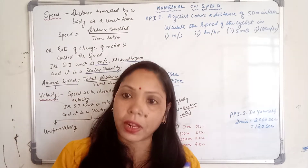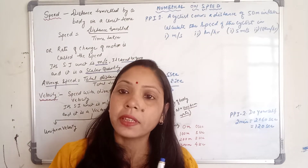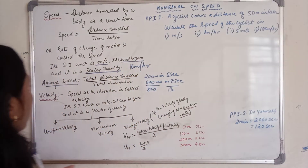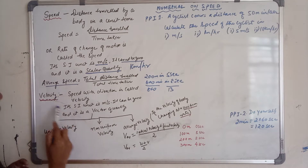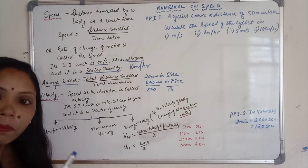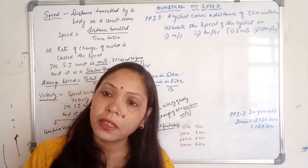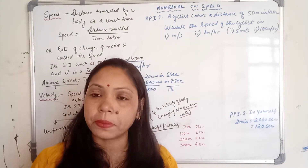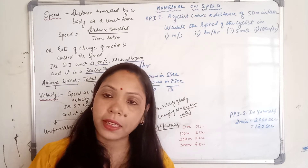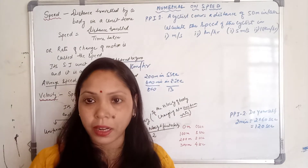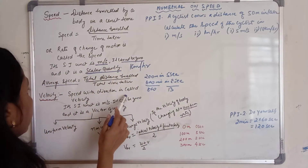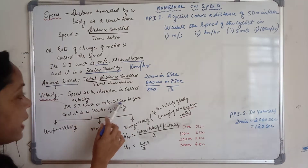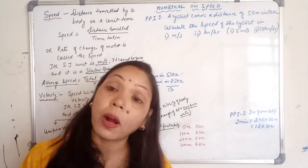Or you can say velocity is equal to displacement divided by time taken. Its SI unit is the same — meter per second. Velocity also we measure in terms of meter per second, and the bigger unit is kilometer per hour. SI unit is meter per second and it can be zero. Why can it be zero? Because velocity is equal to displacement by time.